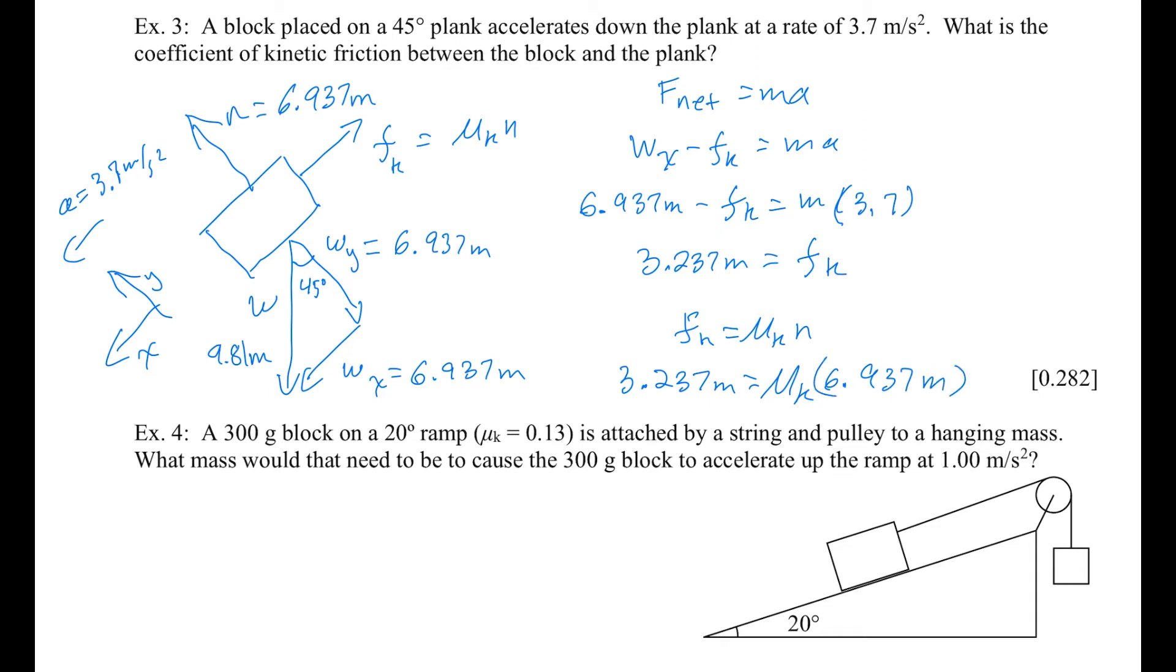You can see that there's m's on both sides of the equation. So I'm going to divide both sides by m, and there's no m anymore. Then I'm going to divide both sides by 6.937 to get rid of the 6.937 in front of that.